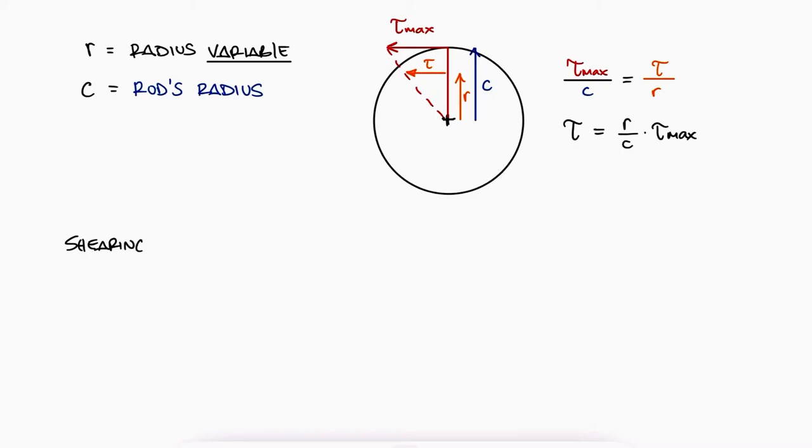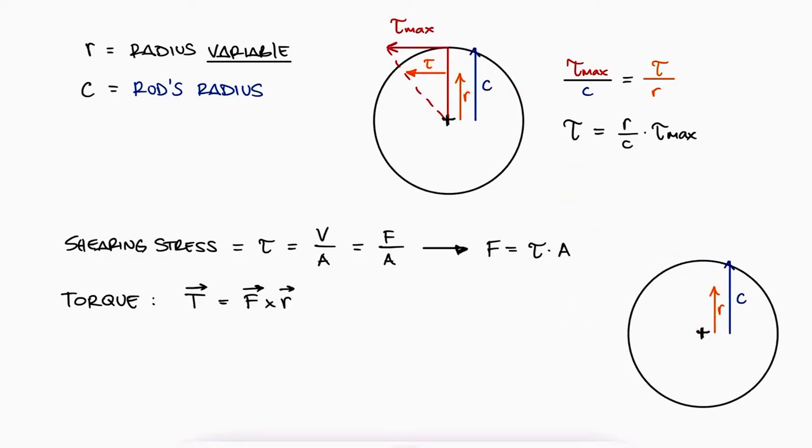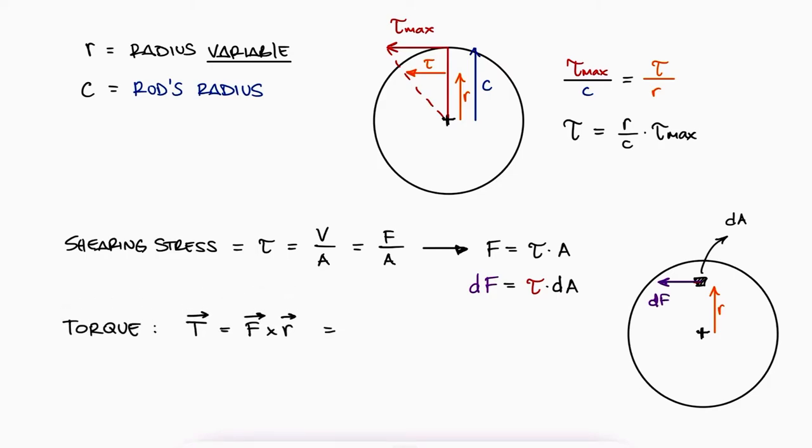If the shearing stress is defined as the shear force over area, then the force can be written as the shearing stress times the area. Remember that the torque is defined as the cross product of the force and the radius. If we look at any cross section area within the rod, the shearing stress at a distance r affecting an infinitesimal area dA multiplied by that area dA would result in the force that that dA is subjected to. With the definition of the torque, we can write that the total torque is equal to the integral of r dF for all infinitesimal forces dF within the circle, and we can substitute dF to find an expression for the torque.